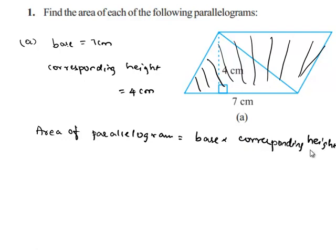That is equal to base is given as 7 cm and corresponding height is 4 cm. That is equal to 7 × 4 × cm × cm. That is equal to 7 times 4 is 28, cm × cm is cm².